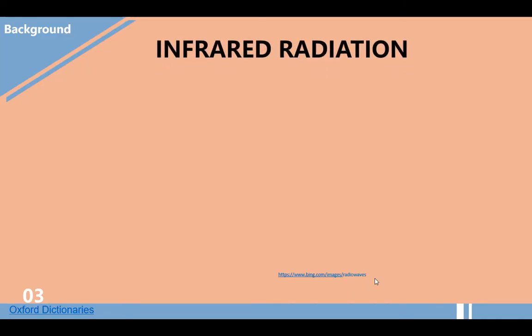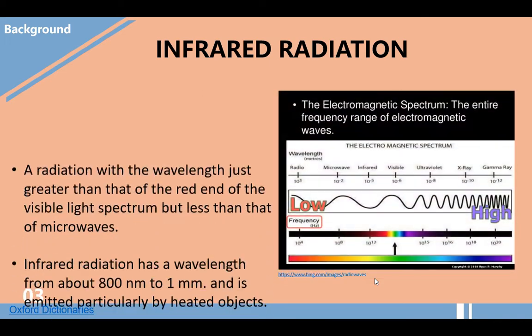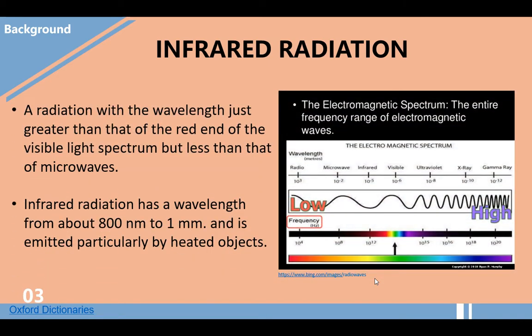Infrared radiation is defined as radiation with a wavelength just greater than that of the red end of the visible light spectrum, but less than that of microwaves. As we can see in our electromagnetic spectrum, infrared radiation is located in that region. Infrared radiation has a wavelength from about 800 nanometers to 1 millimeter and is emitted particularly by heated objects.